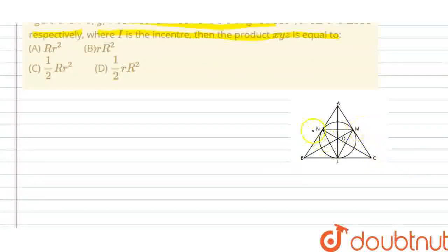OL is equal to ON is equal to OM, which is the radius. This is OL equals ON equals OM, that is the radius of this circle. Let it be small r.